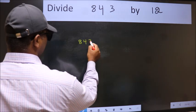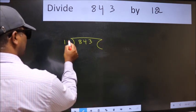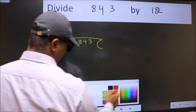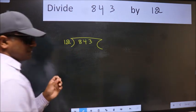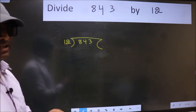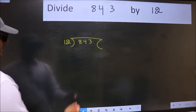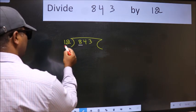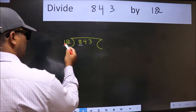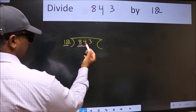843 here, 12 here. This is step 1. Next, here we have 8 and here 12. 8 is smaller than 12, so take 2 numbers: 84.